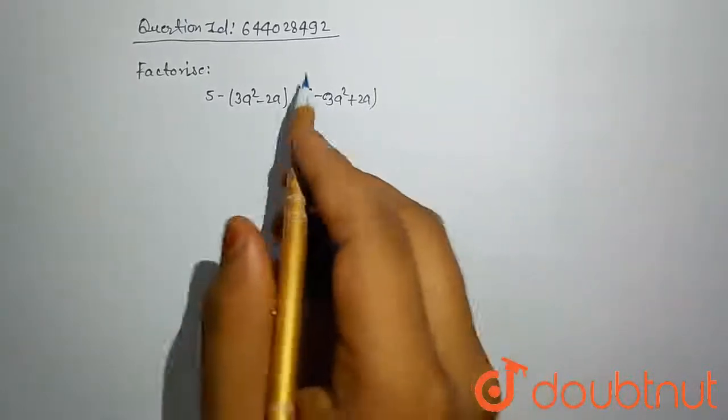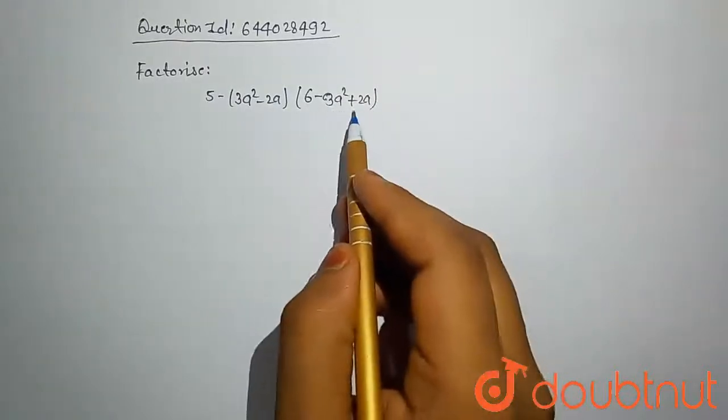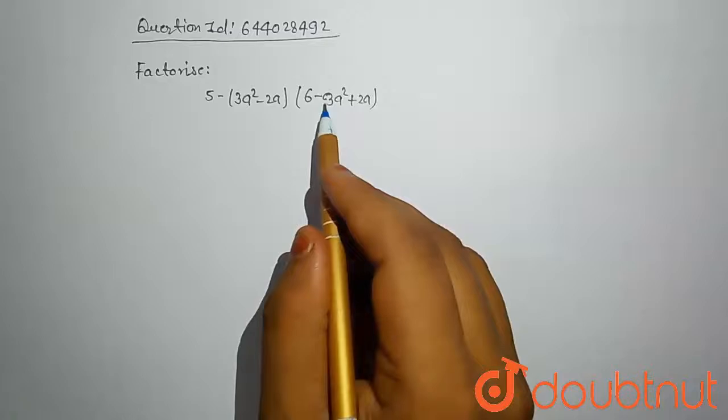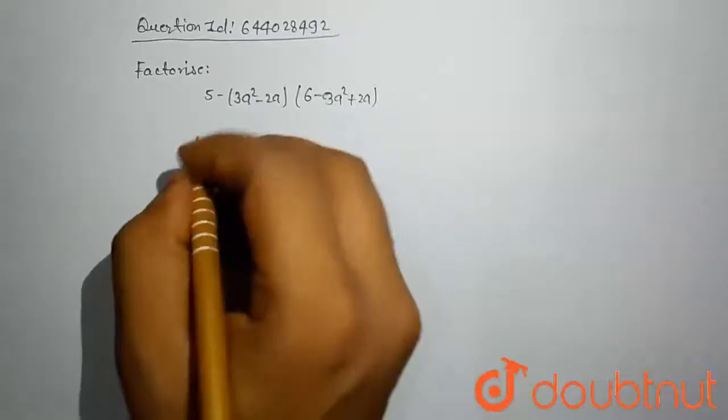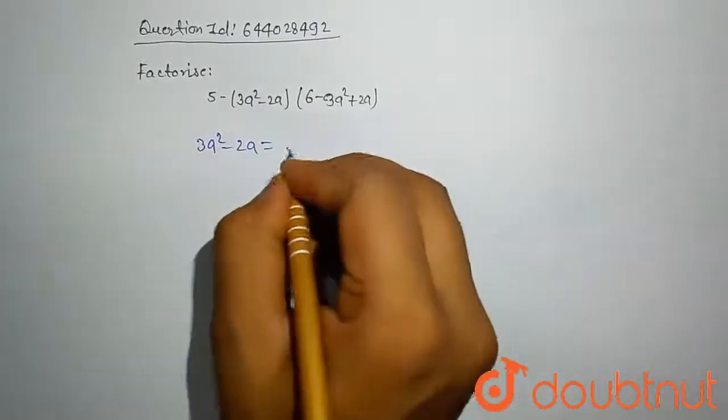Here you can see 3a^2 minus 2a in both terms. Let's assume 3a^2 minus 2a is equal to t.